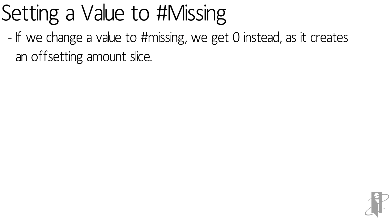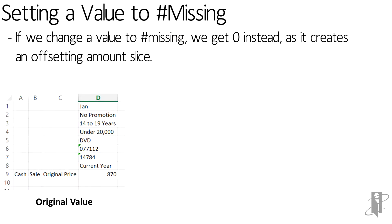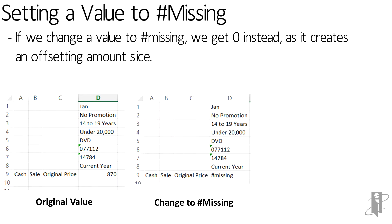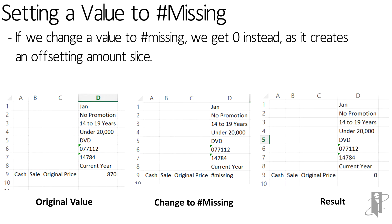If we set the value to missing in Smart View, we'll get a zero instead, as it creates an offsetting amount. So if we have an initial value of 870 and we set it to missing, what we'll see is a zero as that final result.